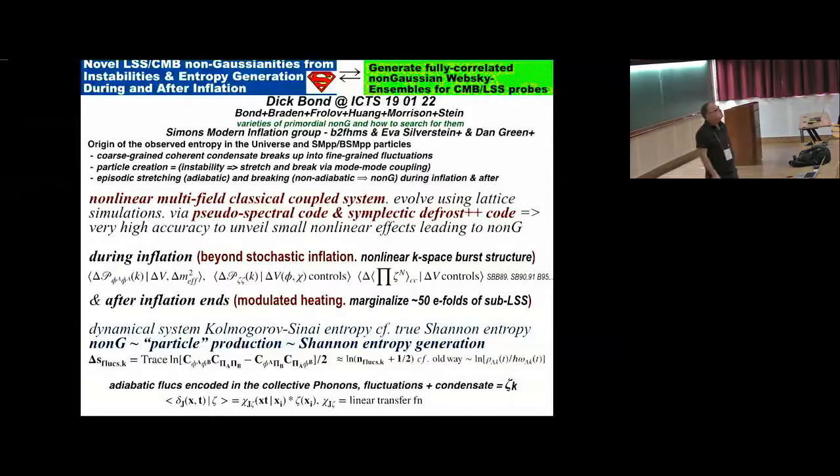Part of this is related to nothing less than the origin of the observed entropy in the universe in the standard model of particle physics. I described in the general lecture something about the split of the system into a coarse-grained condensate breaking up into fine-grained fluctuations that does correspond to particle creation. If there's an instability, that does not create non-Gaussianity by itself. But if you stretch parameter space, then eventually you stretch it to the breaking point, and that's the point where you can create a whole bunch of particles, and that can create non-Gaussianity. This is episodic stretching, which is adiabatic, and breaking, which is non-adiabatic, leading to non-Gaussianity.